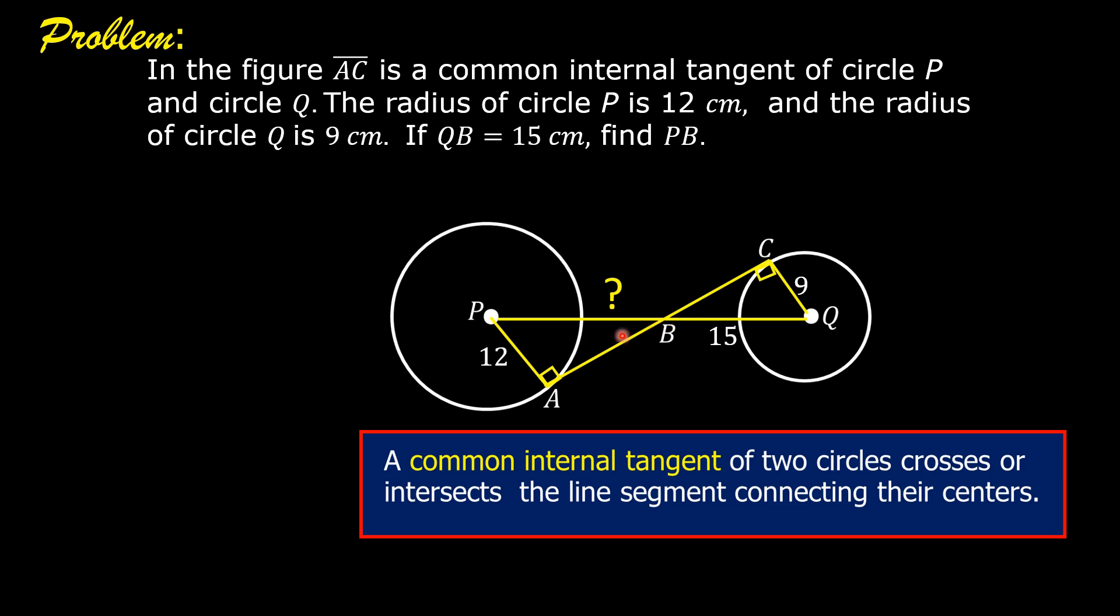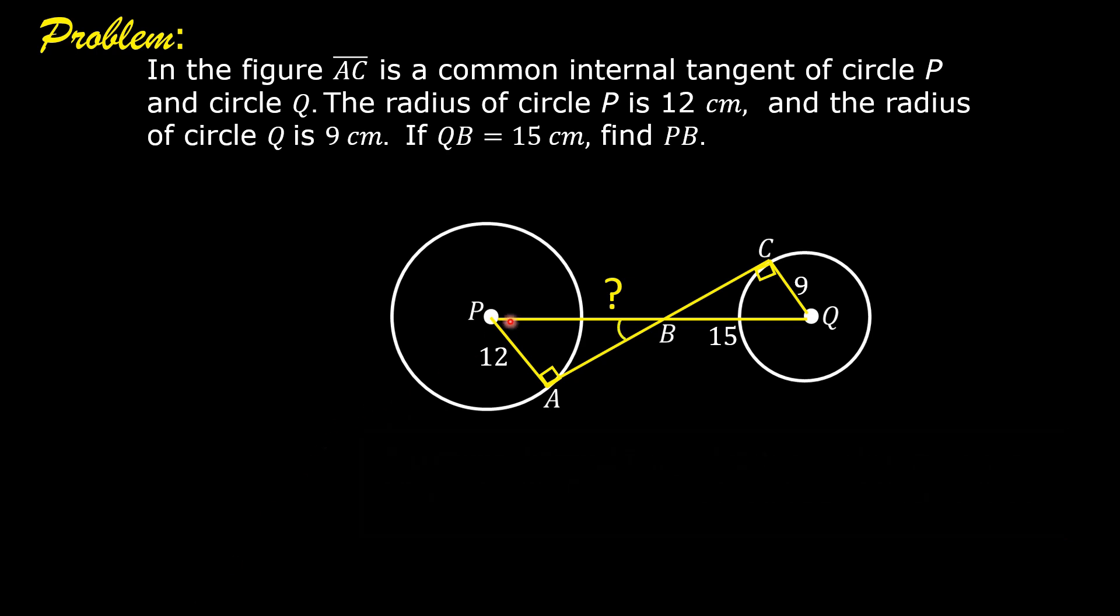There are other angles we can see here that are congruent. Angle PBA and angle QBC are congruent because they are vertical angles, and vertical angles are congruent.